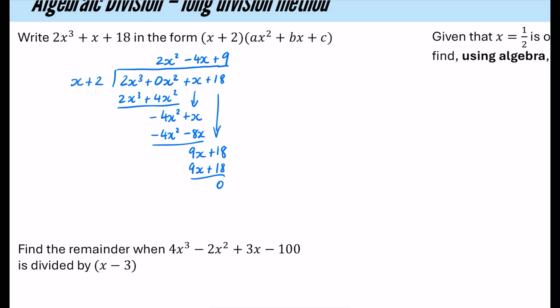It can be written exactly in this form. So the result is (x+2) multiplied by the quadratic 2x² minus 4x plus 9.